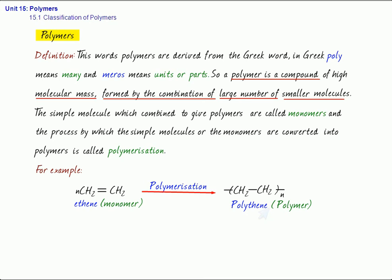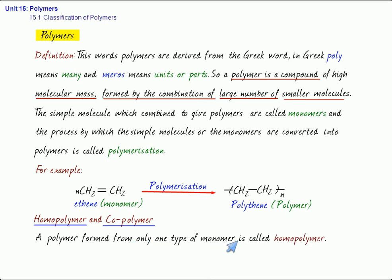Now, let us discuss another topic. This is homopolymer and copolymer. What do you mean by homopolymer? Well, a polymer formed from only one type of monomer is called homopolymer. For example, polythene is a polymer of only one type of monomer, ethene. So, this is a homopolymer.